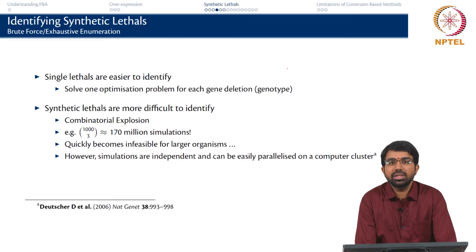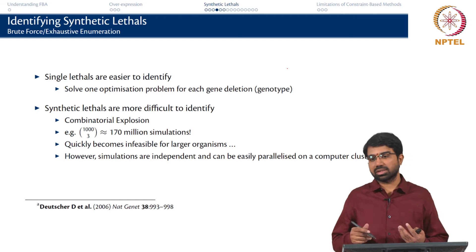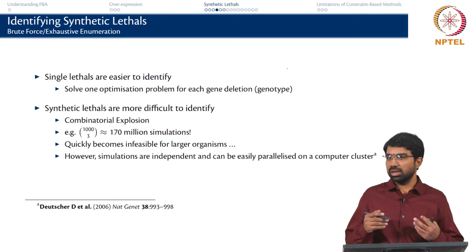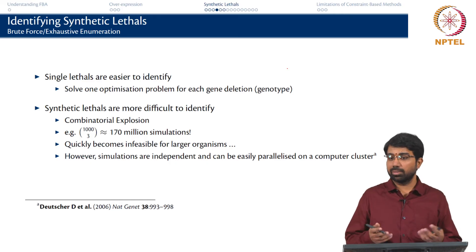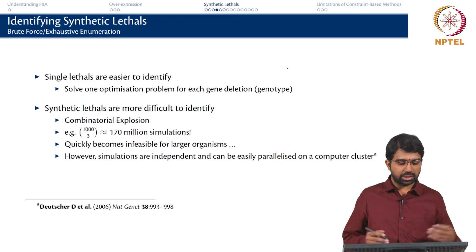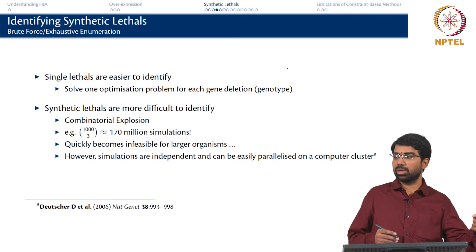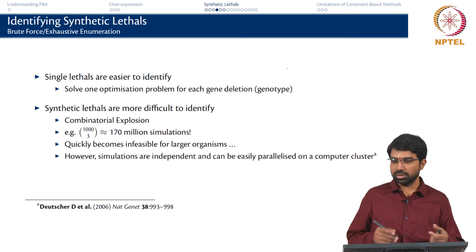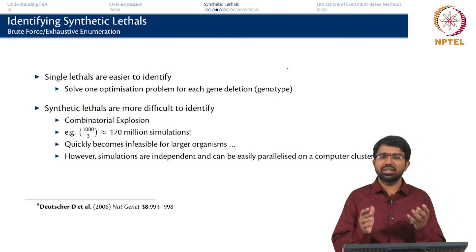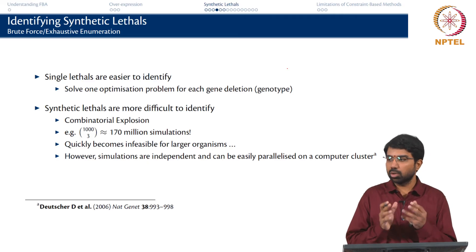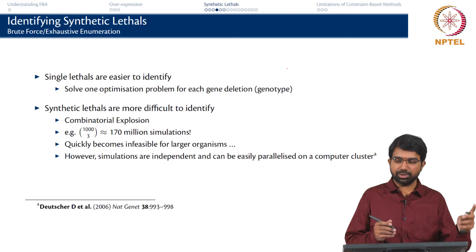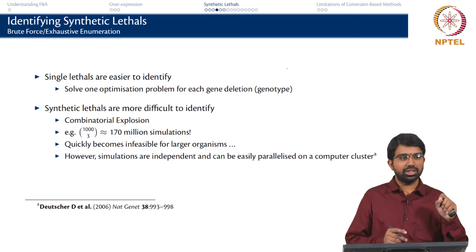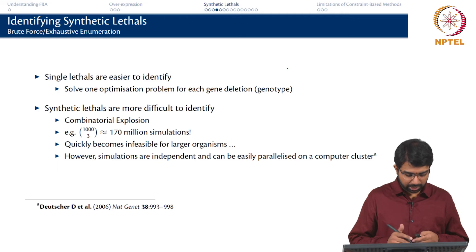Given the simulations are independent, it is easy to parallelize them across a cluster. You offload the heavy computation to multiple cores working in parallel, since none of the simulations depend on one another. It is simply a matter of setting V1 and V2 equal to 0 in one simulation, V1 and V3 equal to 0 in another, and so on. The core LP is the same — maximize C-transpose V such that SV equals 0 — subject to varying additional constraints on what is being deleted.